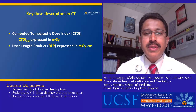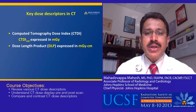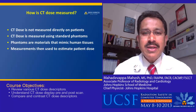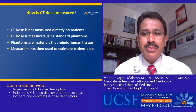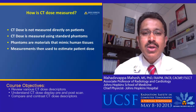The key dose descriptors in CT are the computed tomography dose index volume, with a unit of milligray, and dose length product, also abbreviated as DLP, with a unit of milligray-centimeter. CT dose is measured indirectly — we do not measure directly on the patient. In fact, CT dose is measured using phantoms, which are materials that mimic human tissues. By measurements done on the phantom, we use that information to estimate the risk to the patient.